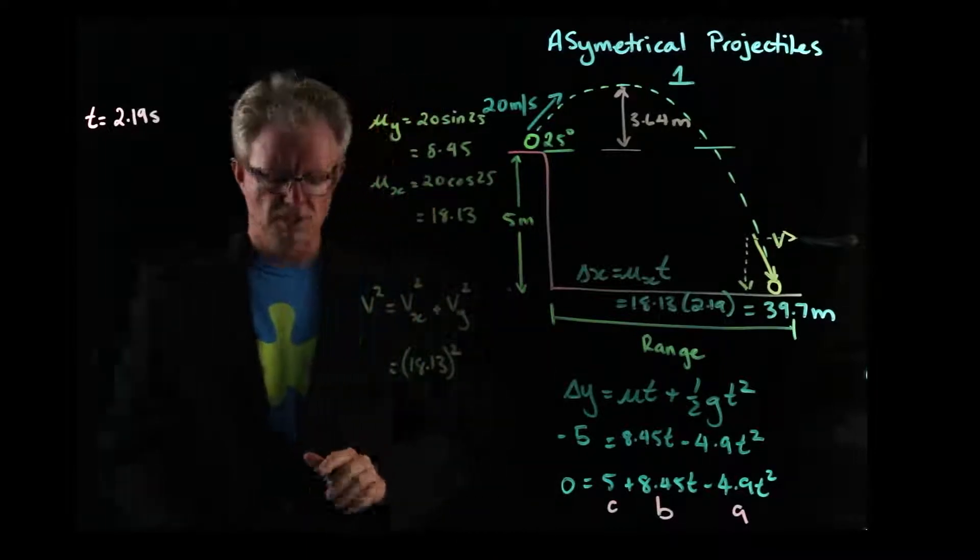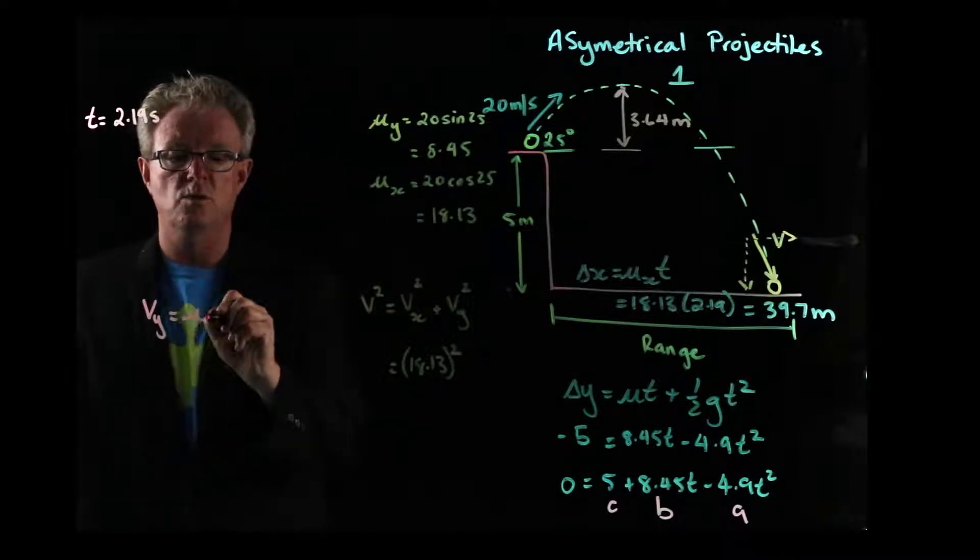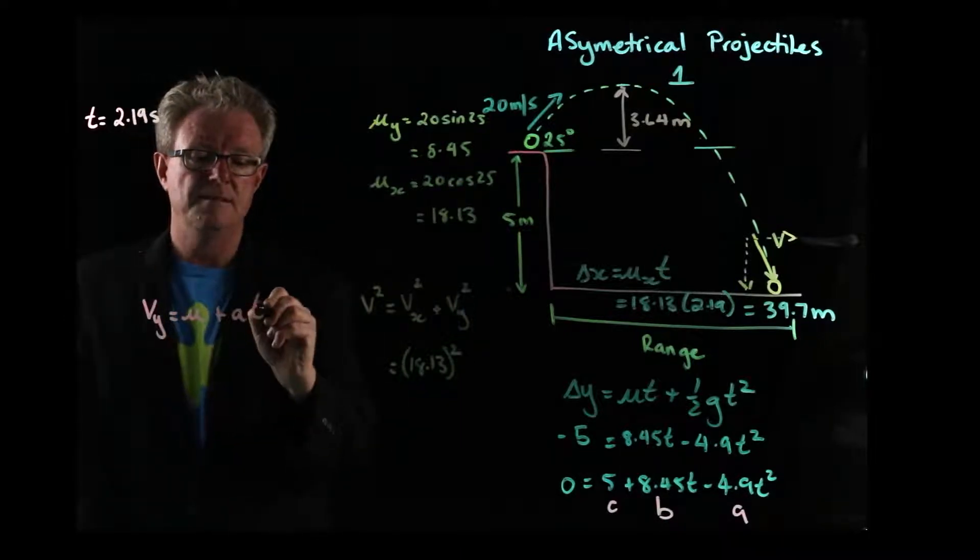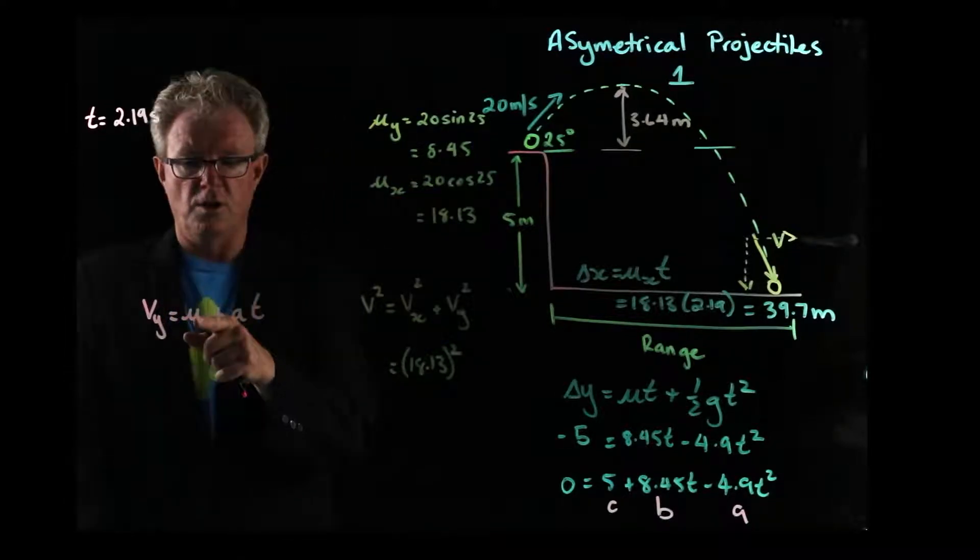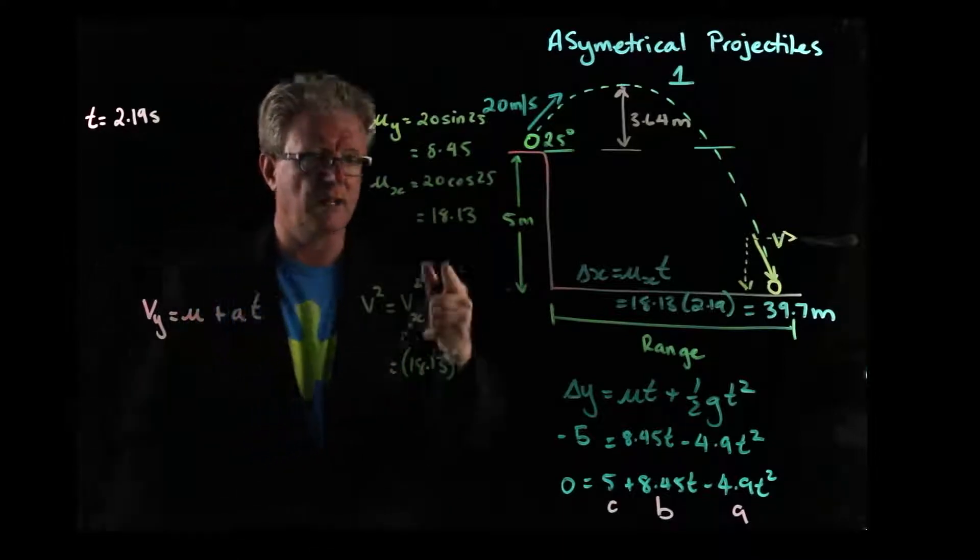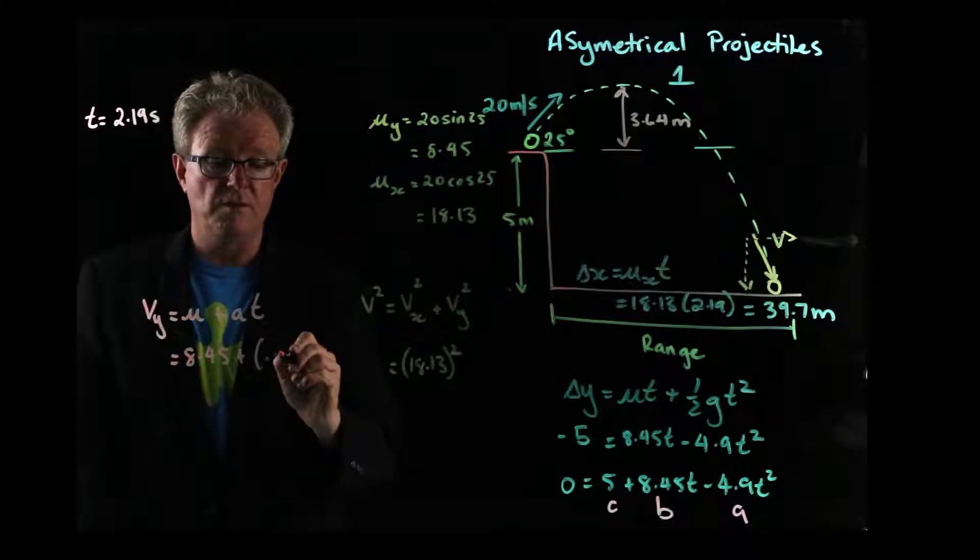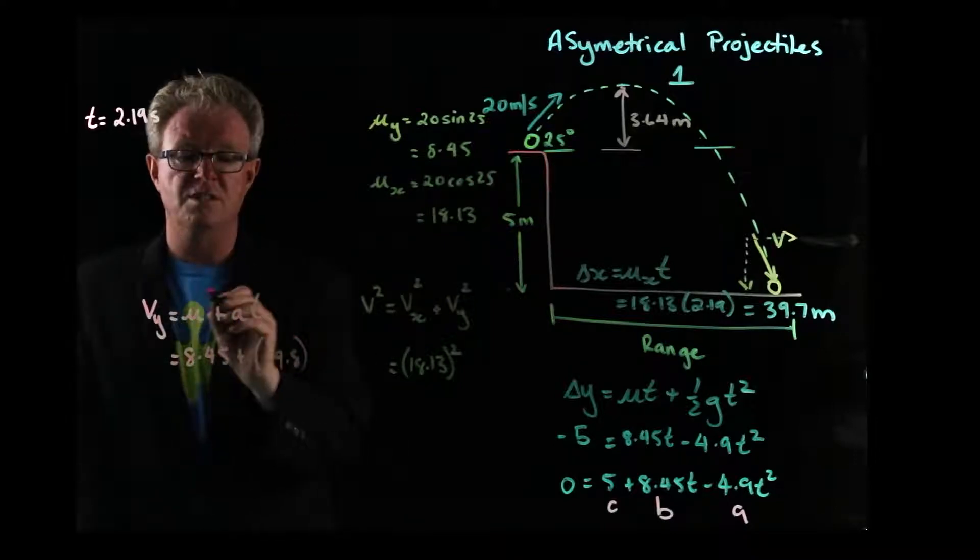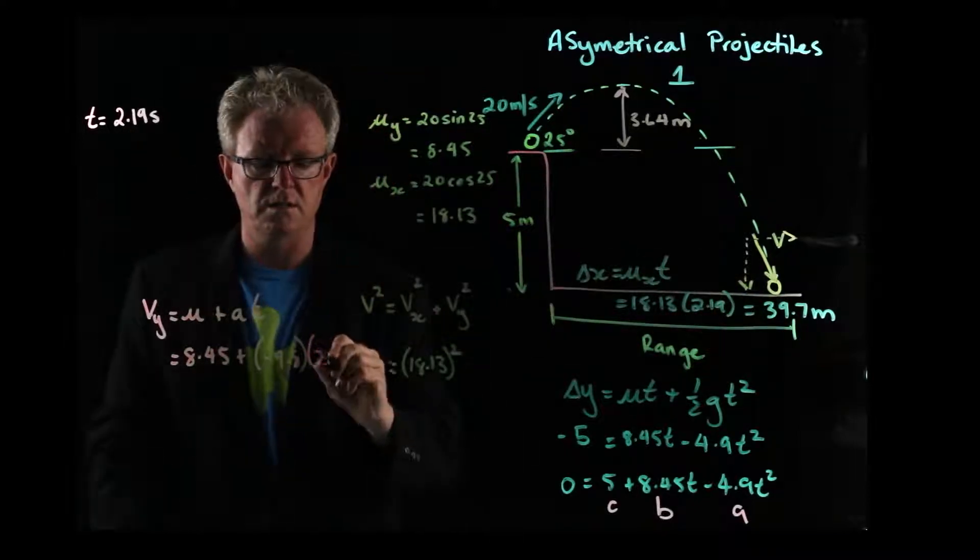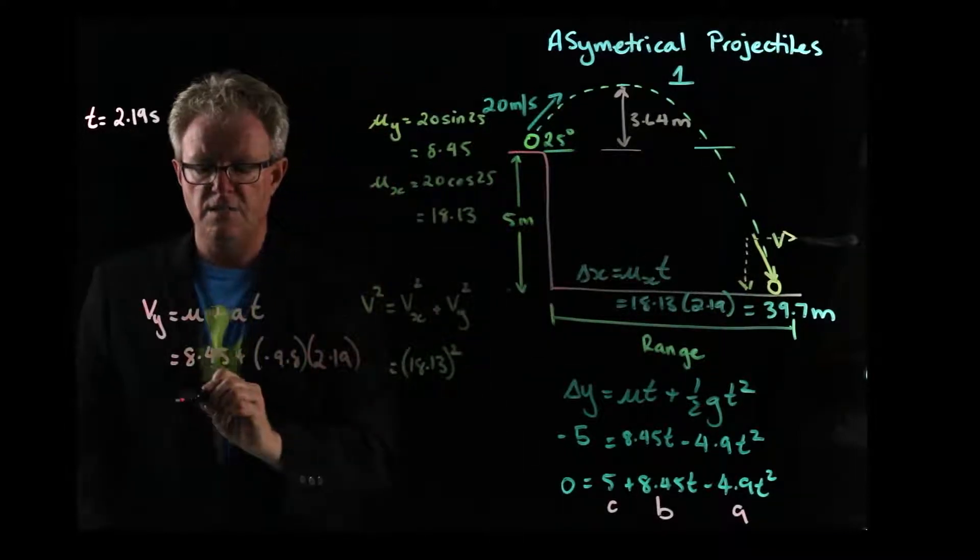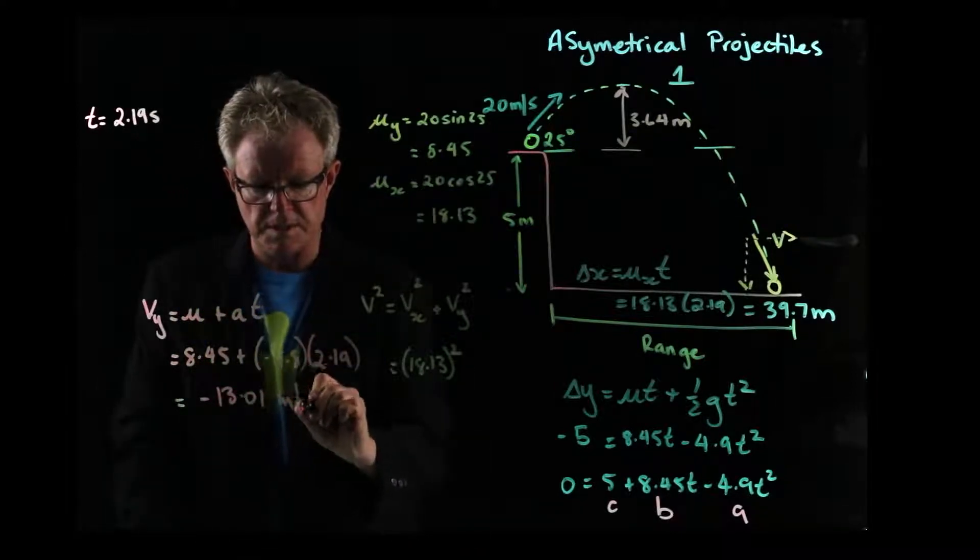What about the y velocity? Well, remember the equation before we had vy is equal to u plus at. Well, we know that the velocity, the initial velocity here, we calculated before, which is 8.45. We know the acceleration due to gravity, minus 9.8. And we want to find the velocity at a specific time. The time it impacts was 2.19 seconds. So that's going to give us the velocity in the y direction. And when you do that, minus 13.01 meters per second. And the minus is just saying it's going downwards.